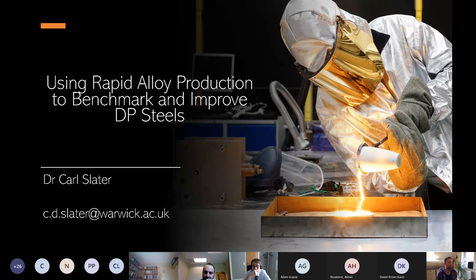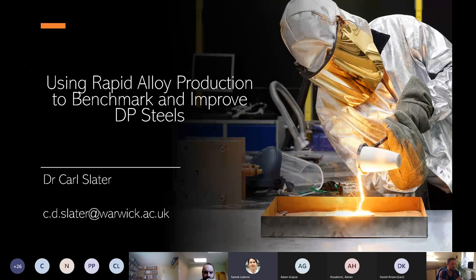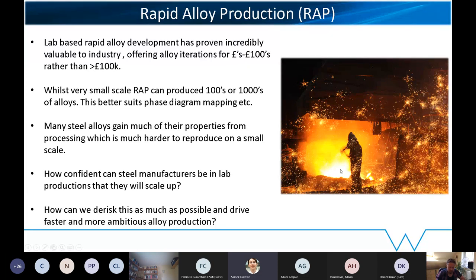This talk is about how we can use rapid alloy production modelling to produce alloys quicker and ideally get to market quicker, taking into consideration upscalability. Lab-scale rapid alloy production has proven invaluable for our industries over the years. Offering alloy development at the pounds or euros level to hundreds for individual alloys means this is much cheaper than the hundreds of thousands of pounds it costs for commercial trials.